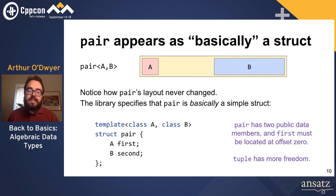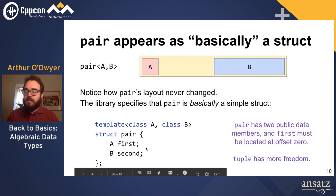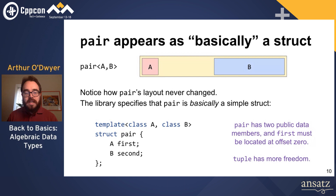A std::pair of A and B is basically a struct. The standard library specifies that std::pair is, to a first approximation, a simple struct with two data members: the first element of the first type, named 'first', and a second data member of the second type, named 'second'. The first one is at offset zero, and the second one comes somewhere after that. That's basically all std::pair is — a struct template with two data members.